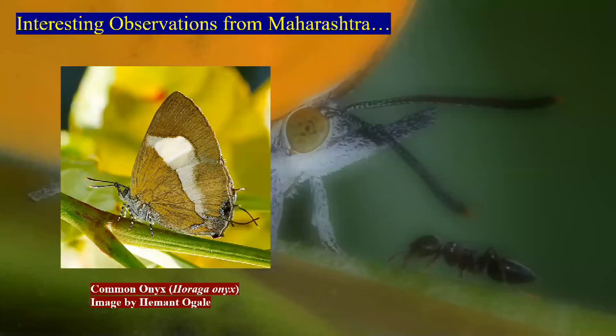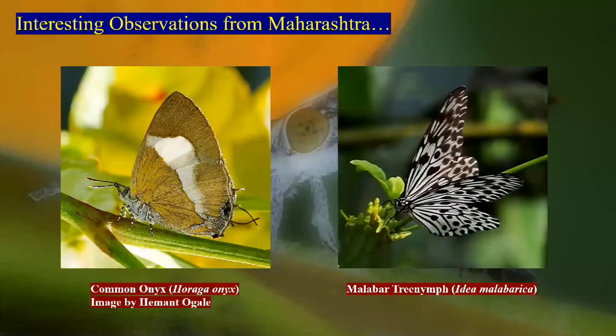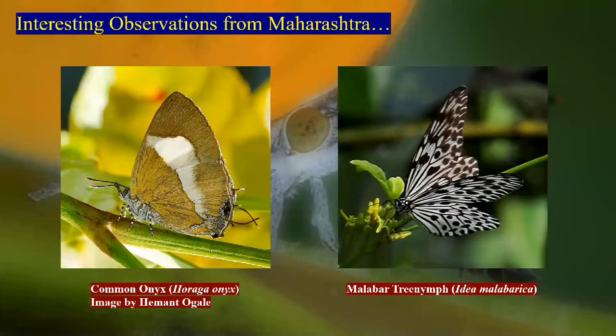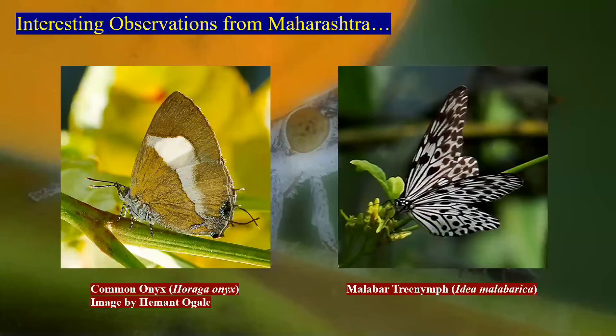Malabar tree nymph — very recently, because of butterfly enthusiasts roaming in forests like Tillari in southern Maharashtra, we learned about the constant activity of this butterfly. According to old literature it was present only till Karnataka and Goa. Surprisingly, Malabar tree nymph has also been reported from Bhimashankar Wildlife Sanctuary, which is much further north than its original records — a strange and exciting finding. It is one of the really beautiful endemic Western Ghats butterflies.